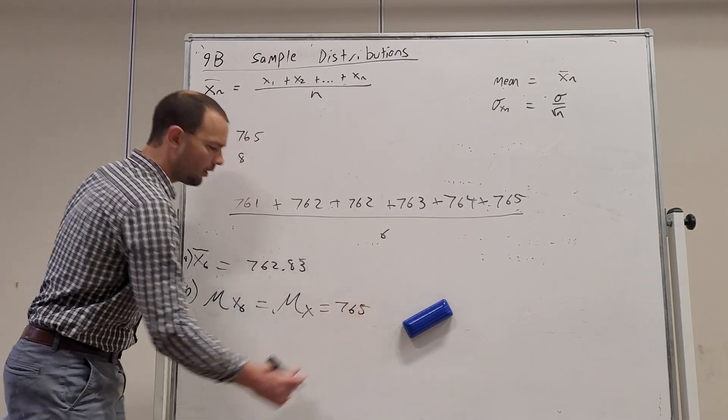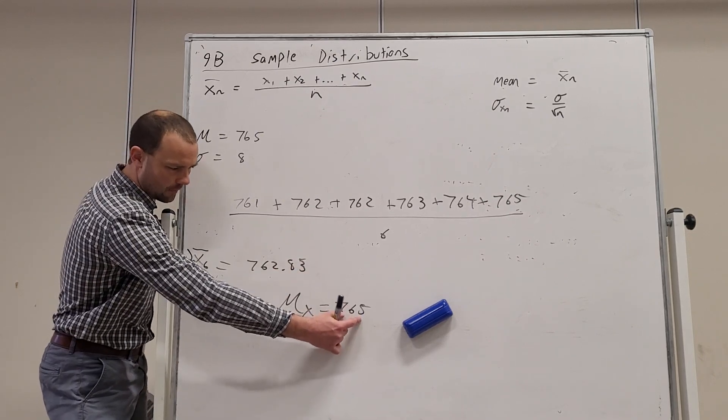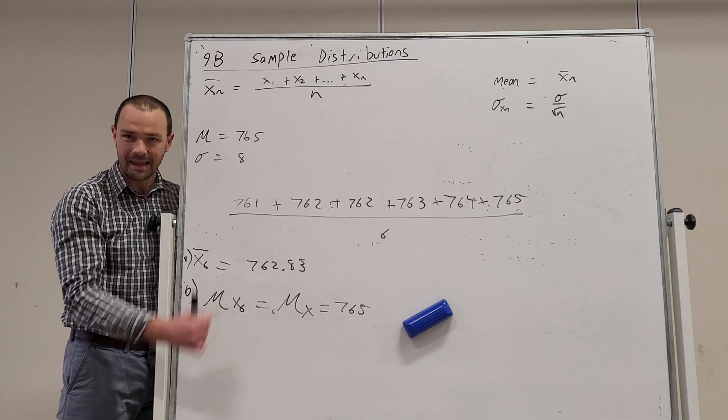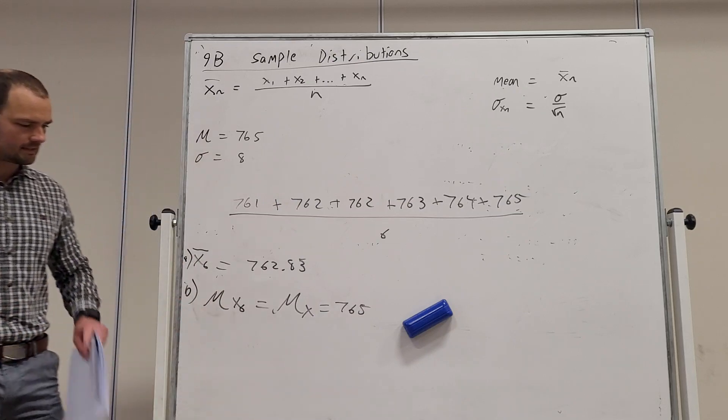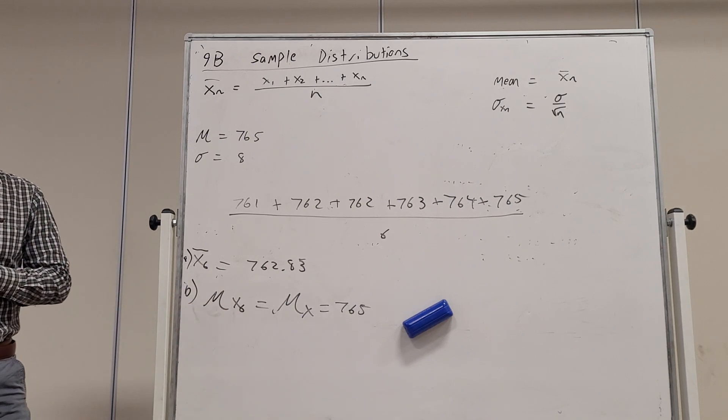And so even though we calculated this value, the known mean is going to trump it when we state the mean of x6. So that's one way we can denote it, the mean of subscript x6.